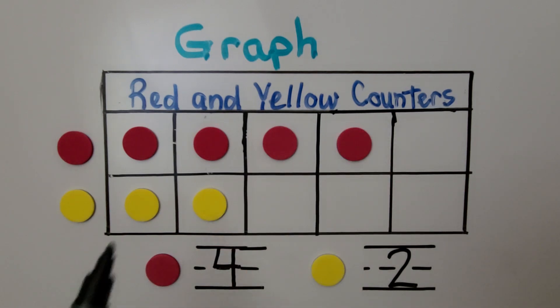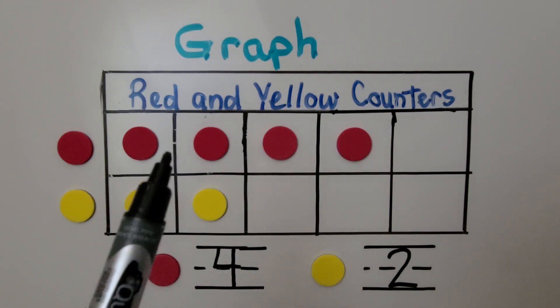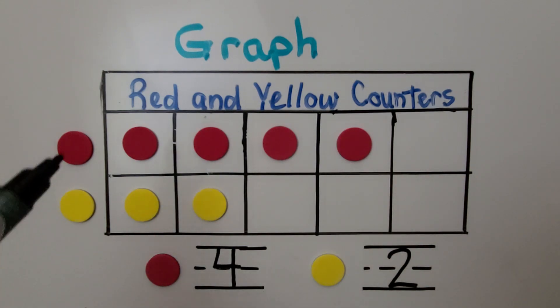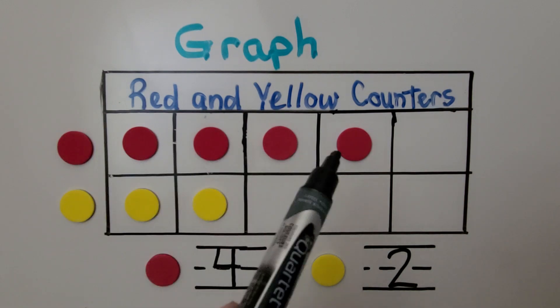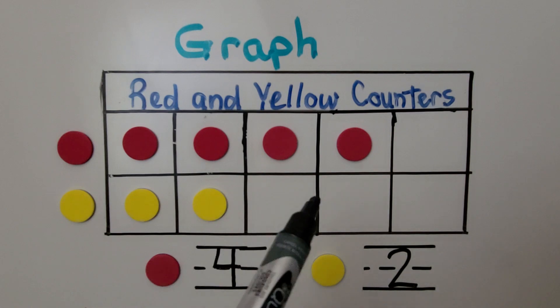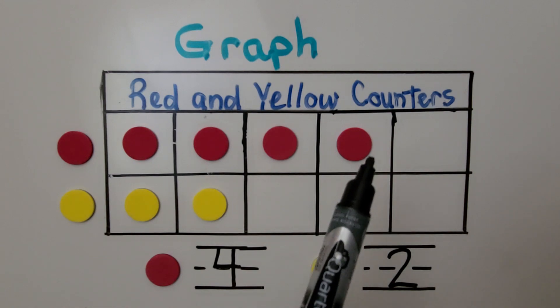It shows two rows going across. We have a row here, and we have a row here, and we have these, which are picture labels. They tell us what is in the row. We have a red counter here, so this is the row for red counters. We have a yellow counter here, so this is the row for yellow counters. And we can easily see we have more red counters than yellow counters.